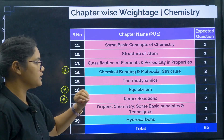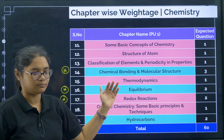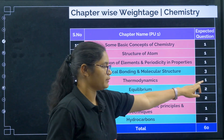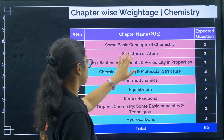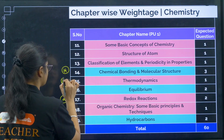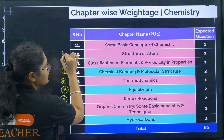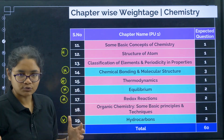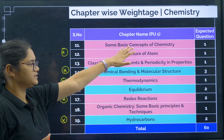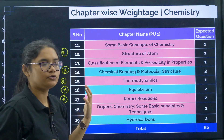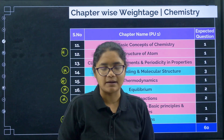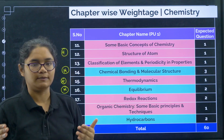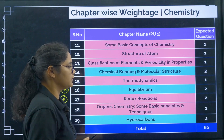Chemical Bonding is very, very important — VSEPR theory you must study properly. Then Thermodynamics: every year you get one question so you cannot avoid it. These are the topics you should be doing from PU1 to get a safe score. Basic Concepts of Chemistry is a fundamental chapter used in daily chemistry, so that is also important.